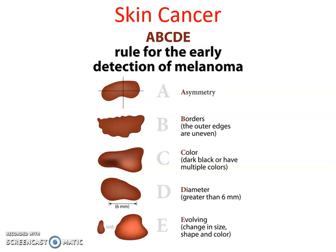Before you panic — just because you have one or two of these characteristics doesn't mean you have skin cancer. Instead, it's something to keep an eye on, which brings us to the letter E: evolving. If it continues to change in size, shape, or color, that's something you'll want to get checked out. If you have a mole that's been there your whole life and hasn't changed, you're probably okay. But if you're seeing changes happen in short periods of time, that is an indicator to go get yourself checked out.